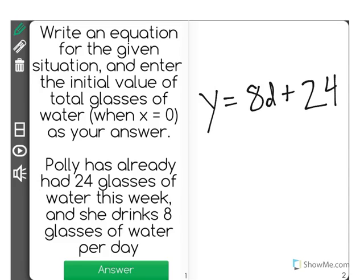Now we want to know the initial value of total glasses. That means when x is equal to 0, or in this case, d represents x.